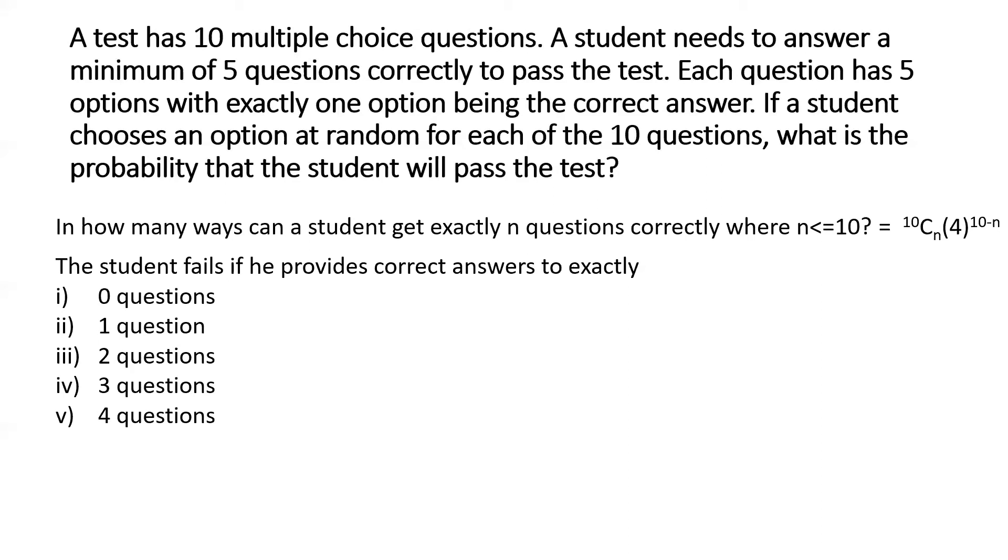So now we have already found out in how many ways a student can get exactly n questions correctly. So for 0 questions that number of ways will be equal to 10C0 into 4 to the power 10 minus 0, which is 10, is equal to 4 to the power 10. And we can pretty much apply the same equation or same formula for each of the following scenarios.